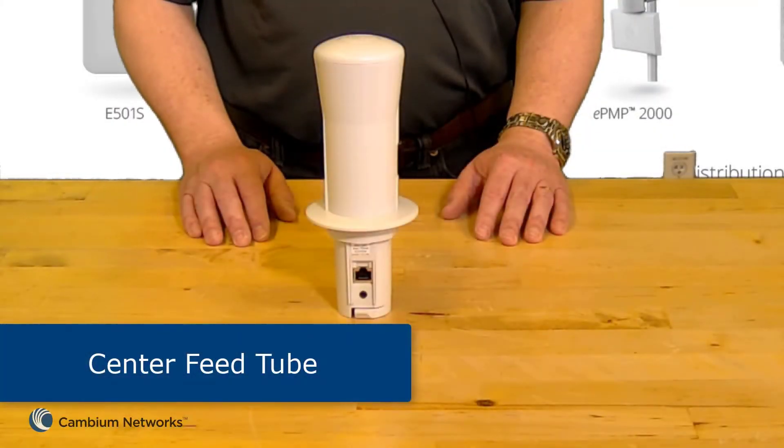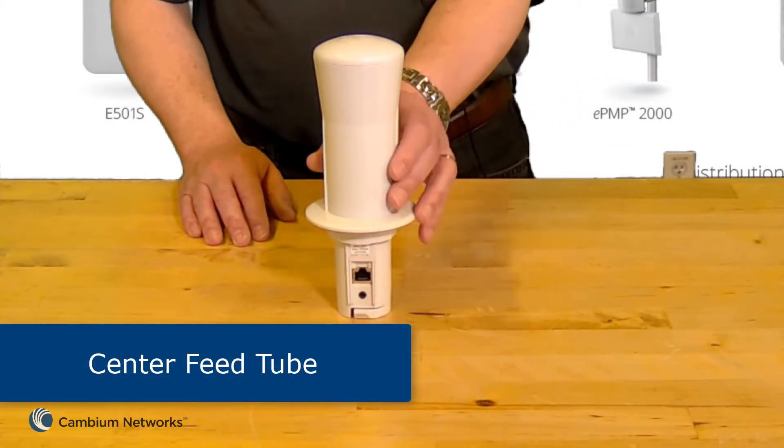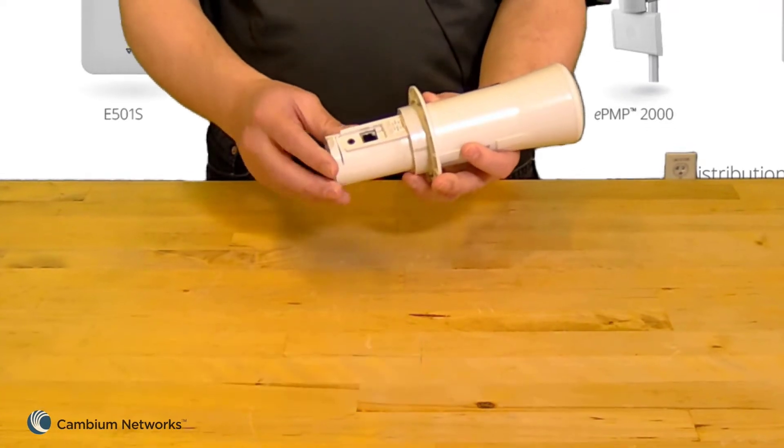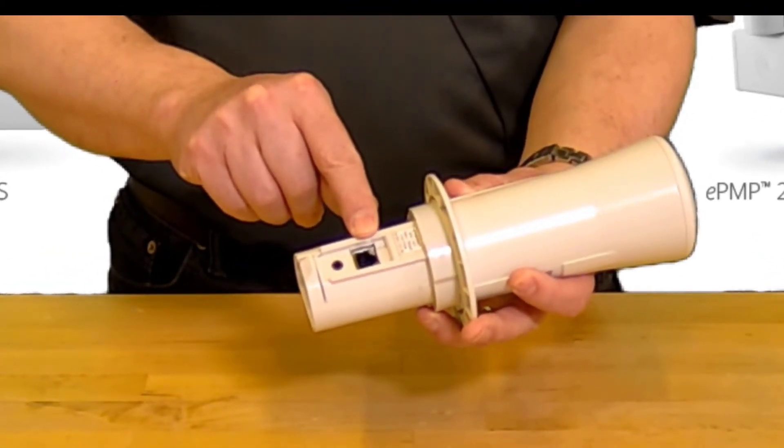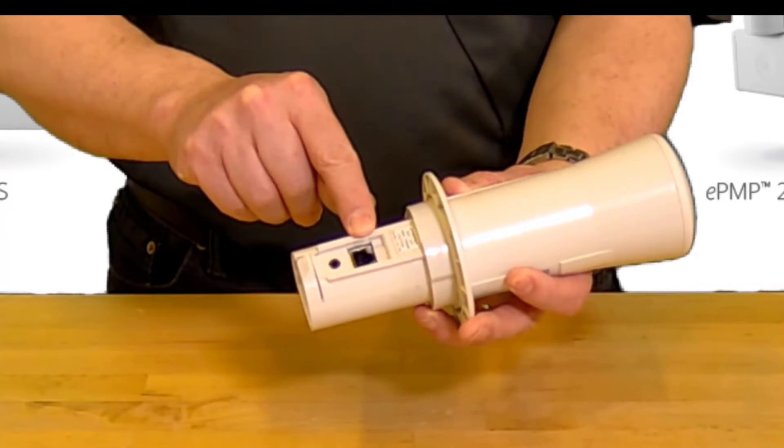First we'll look at the center feed tube. On the rear of the tube there are two ports. This is the main gigabit ethernet port, which is used to provide power and communications for the unit.